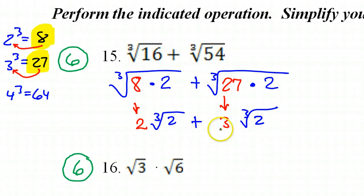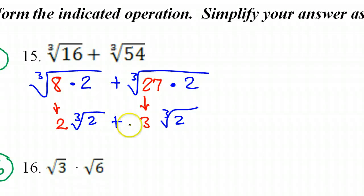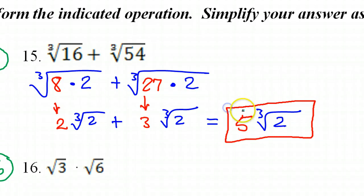Now, because these are like terms, look at the blue part. Cube root of 2, cube root of 2. It's exactly the same. The only thing different is the coefficient. That makes these like terms. So we can go ahead and add this up. If we do 2 of these plus 3 of these, well, that's going to be 5 of these. So I'm going to have 5 cube root of 2. So that will be the answer for number 15.